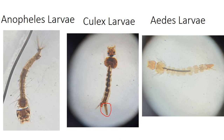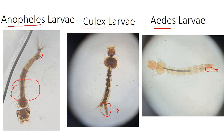Larvae are identified by siphon tubes — the respiratory trumpets through which the larva respires. When the siphon tube is very conspicuously and apparently present, it is a Culex larva. When it is present but not as long and slender as Culex, it is Aedes. When it is entirely absent, it is Anopheles. To confirm Anopheles, look for the presence of palmate hairs. Be careful not to confuse anal gills and caudate hairs with siphon tubes.